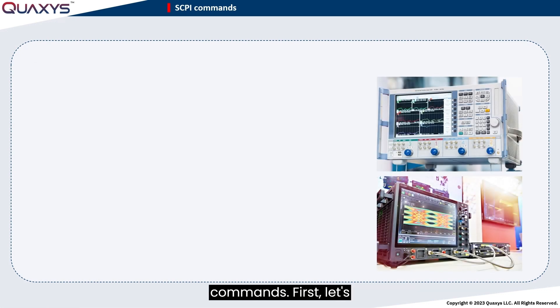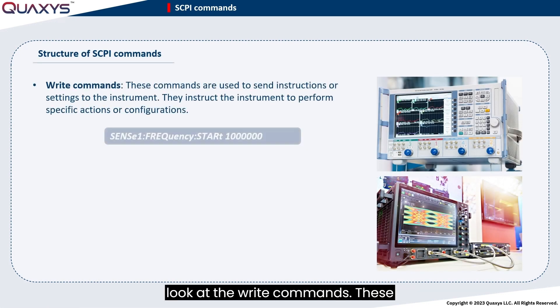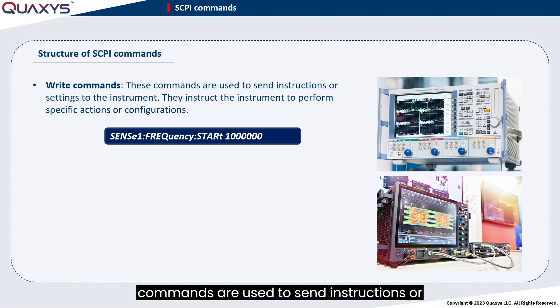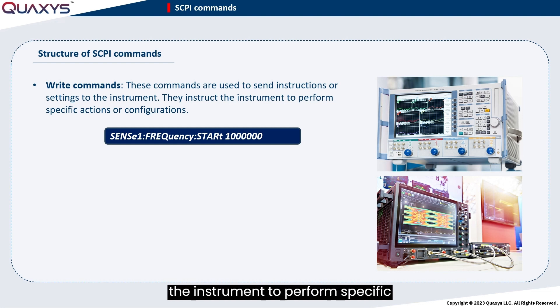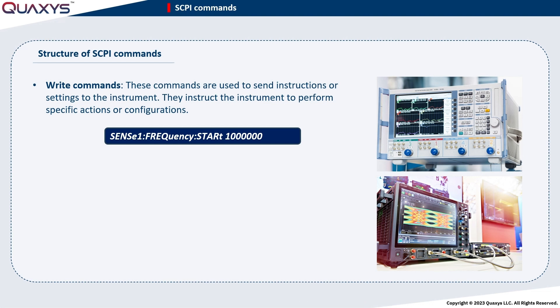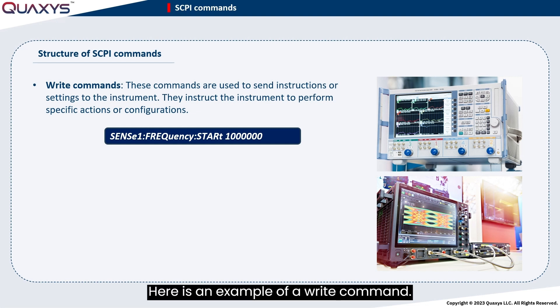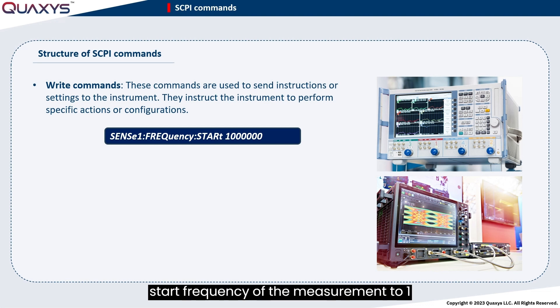There are two general types of SCPI commands: write commands and query commands. Write commands are used to send instructions or settings to the instrument. They instruct the instrument to perform specific actions or configurations. Here is an example of a write command — this command instructs the VNA to set the start frequency of the measurement to 1 MHz.